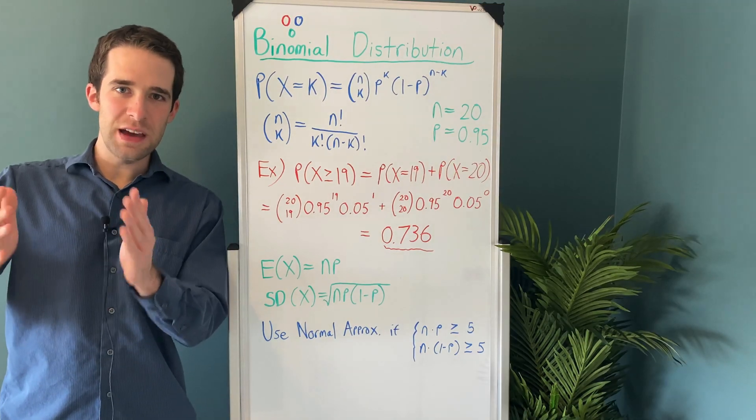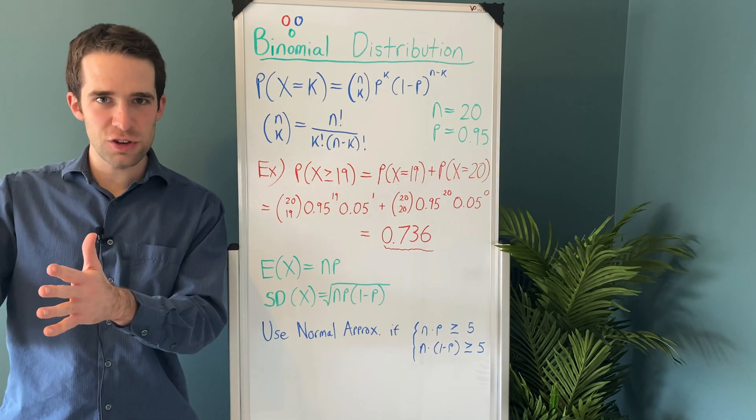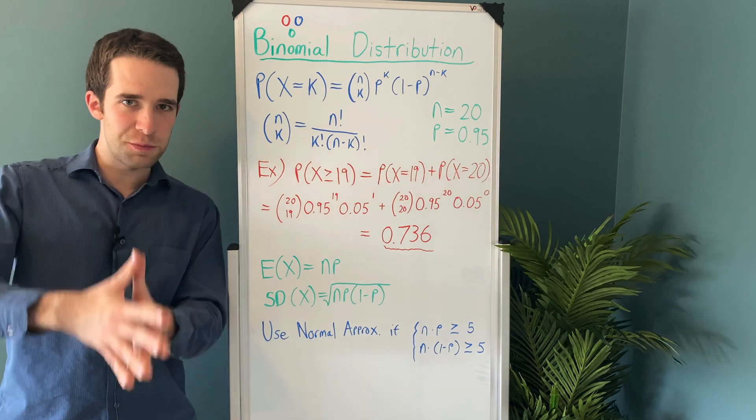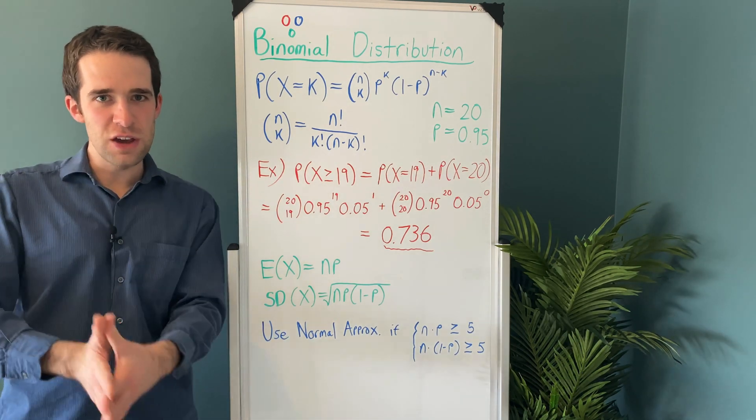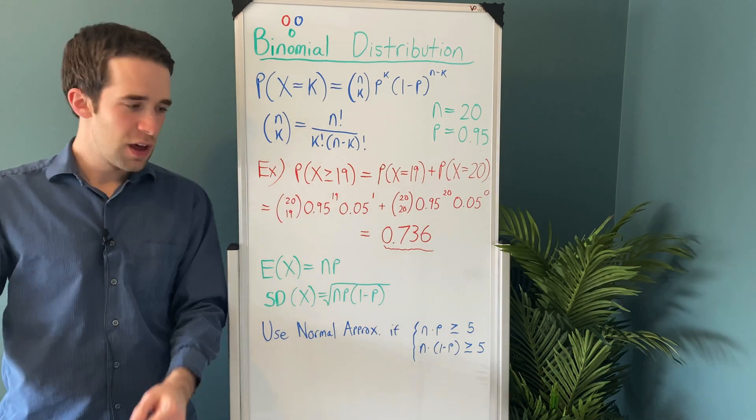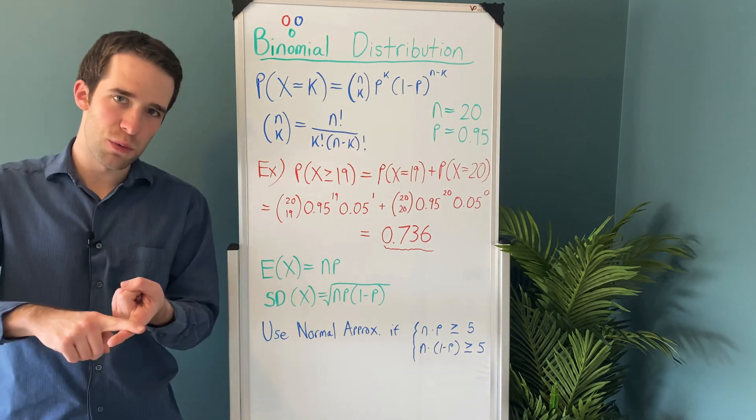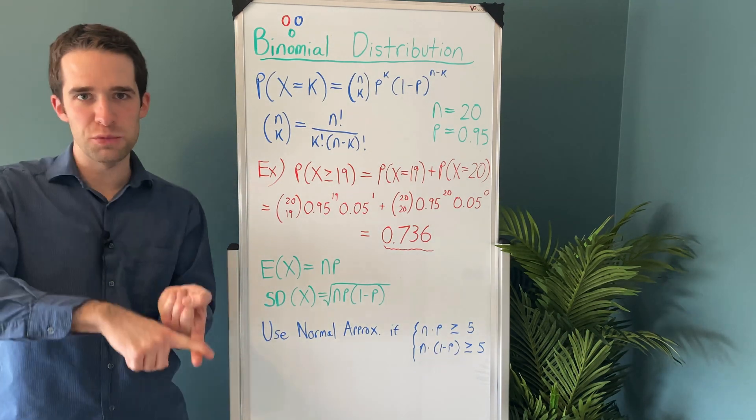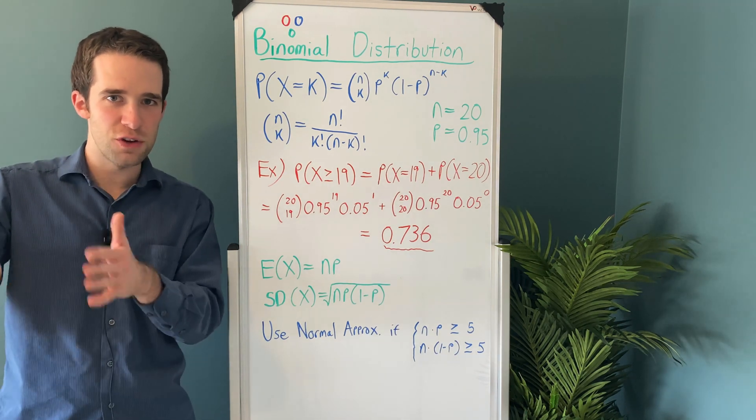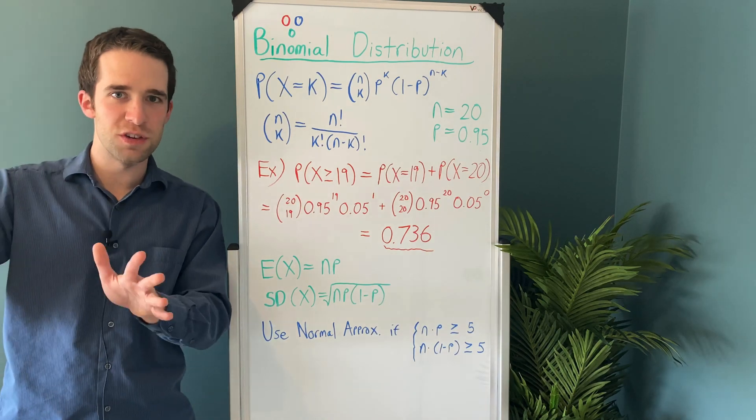Now that you hopefully see how to use the binomial distribution to perform probability calculations, just a couple more properties for the binomial distribution. You can calculate an expected value, a standard deviation, a variance, all of that for the number of successes. The expected value is just n times p. The standard deviation is the square root of n times p times 1 minus p, and the variance is just the square of the standard deviation. So that would be n times p times 1 minus p. Forget the square root sign.